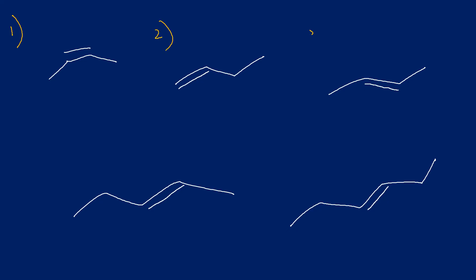Here we have five alkenes on the screen. If you wish, pause the video and see if you can identify whether they are symmetric or asymmetric. When you want to see the answers, unpause the video.